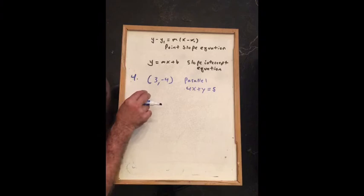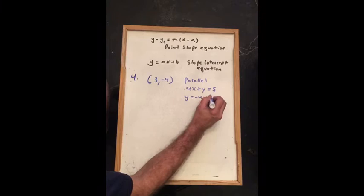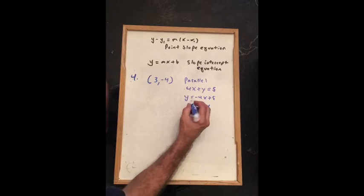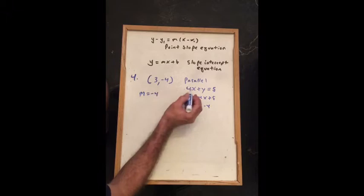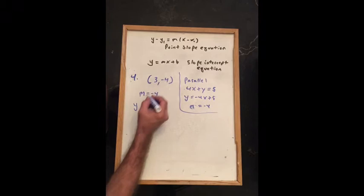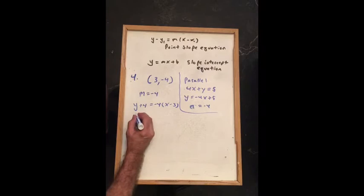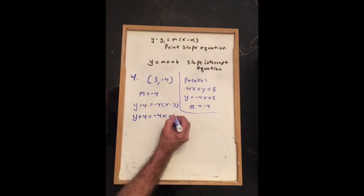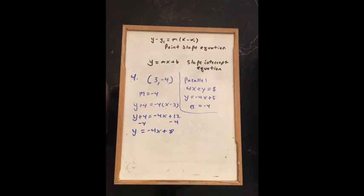For problem 4, we are given the point (3, −4), and the line is supposed to be parallel to 4x plus y equals 5. I can rearrange this by subtracting 4x from both sides, and more importantly I can say m equals negative 4. Since the line must be parallel, it has the same slope, so m equals negative 4. Using the point-slope equation, y plus 4 equals negative 4 times x minus 3. Distributing gives y plus 4 equals negative 4x plus 12, so y equals negative 4x plus 8.